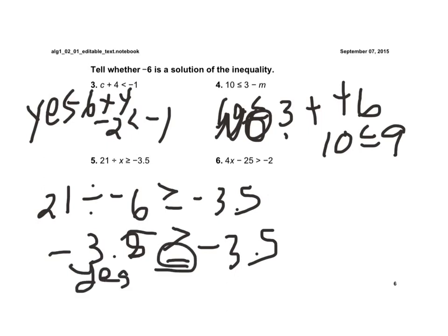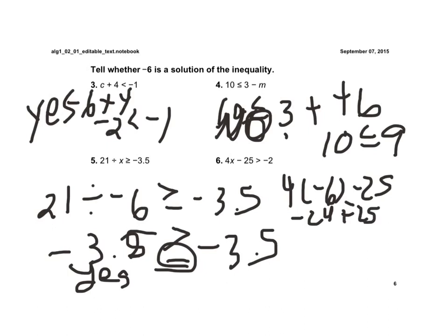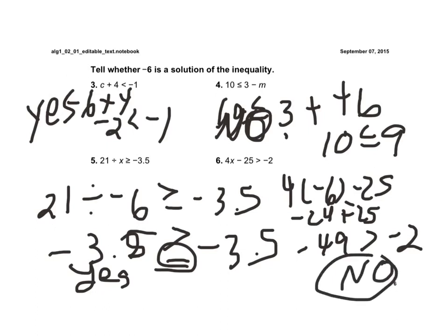The last one: we'd have 4 times negative 6 minus 25. That's negative 24 minus 25; using keep-change-change, that's negative 49, which has to be greater than negative 2. Negative 49 is to the left of negative 2 on the number line, and if it's to the left, it's less. So negative 49 greater than negative 2 is a false statement, so no, that's not a solution.